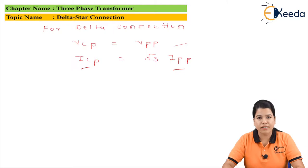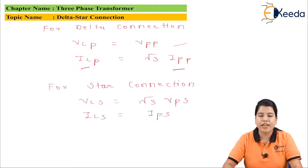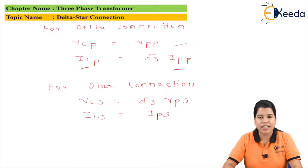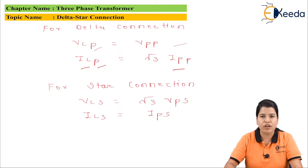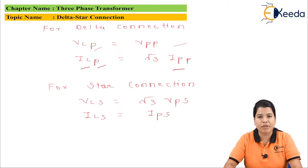In the case of star connection, VLS equals root 3 times VPS, and ILS equals IPS. In our transformer, the primary is connected in delta whereas the secondary is connected in star, and the notations are given accordingly for the primary and secondary windings.